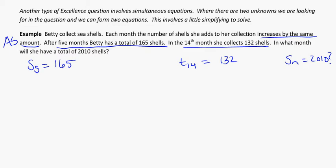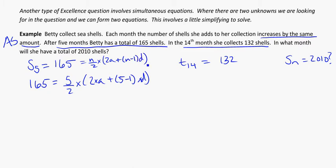You'll notice, unlike the easier problems we've looked at, we have no information about A or D, and we don't really have any way to find that either. So what we have to do is write some equations out. For this first bit of information, I'm going to have 165 equals 5 over 2 times 2 times A plus 5 minus 1 times D. That's using my sum formula. And for T14, knowing that the formula for Tn equals A plus n minus 1 times D, so T14 becomes 132 equals A plus 14 minus 1 times D.